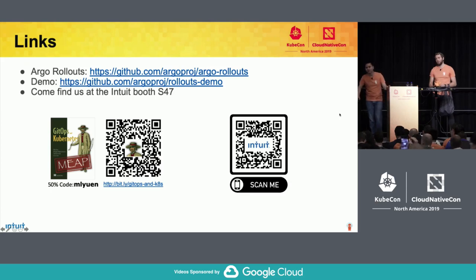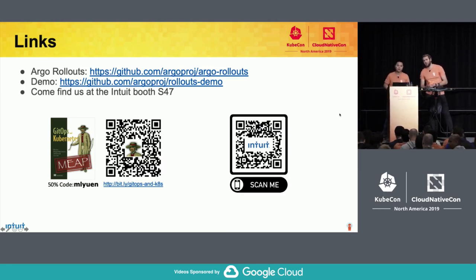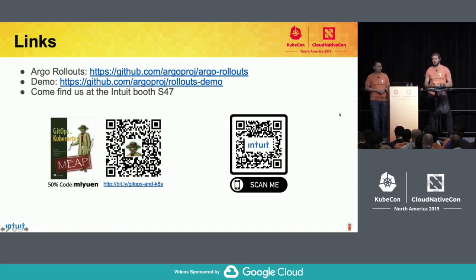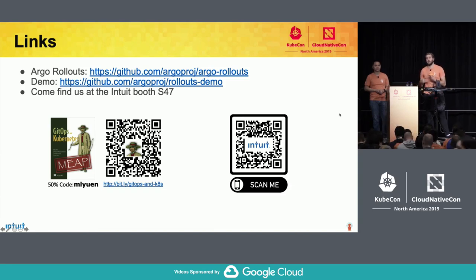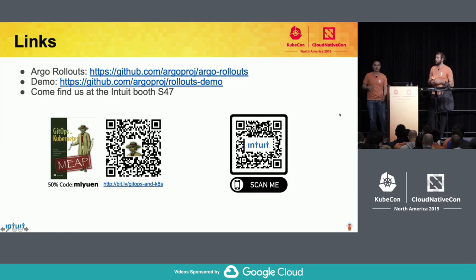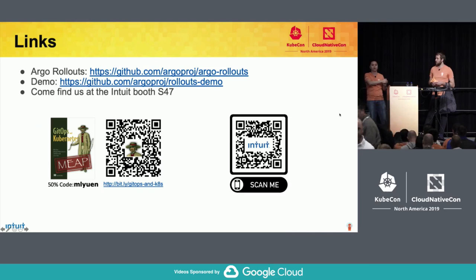Last question: do the analysis runs literally just test error rates? The nice thing about the analysis template is that it's totally configurable by the user — you don't only have to test error rates, you could test other things like saturation. It depends on what metrics you have available. If you get anything from this talk, the key point is that the analysis template gives developers control of what they consider interesting metrics for their specific application. Using PromQL queries, they can write whatever query they want to extract the metrics they care about.